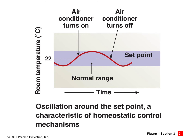Here's another example of thermoregulation: at 22 degrees Celsius as a set point, when the temperature rises above that, the air conditioner turns on and continues running until the temperature drops back down far enough, then it turns off. The temperature will eventually rise again. That middle line is called the set point. Our bodies are always trying to keep those feedback systems at the set point.